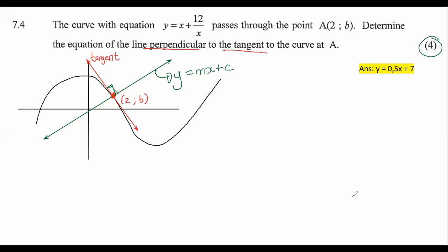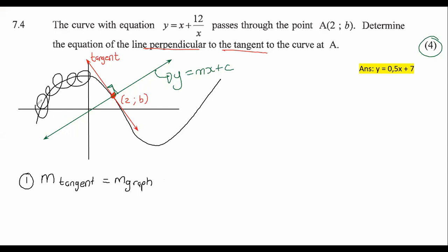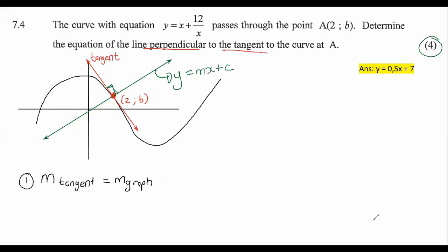Let's make a few notes about what we should remember about tangents and perpendicular lines. Number one: the gradient of the tangent is the same as the gradient of the graph at that point. Your teacher would have told you this before — the gradient of the tangent equals the gradient of the graph at that specific point.